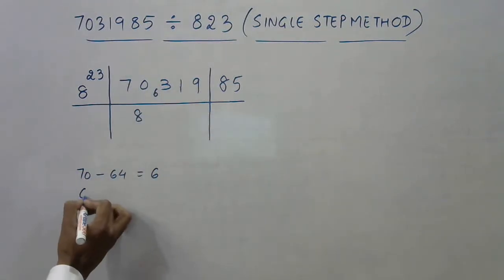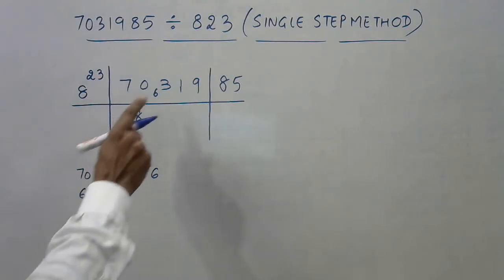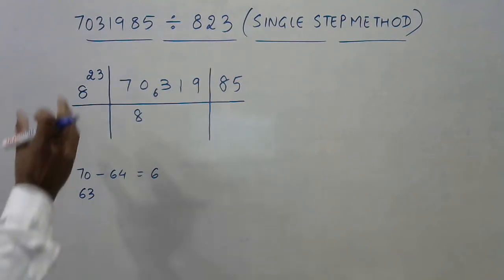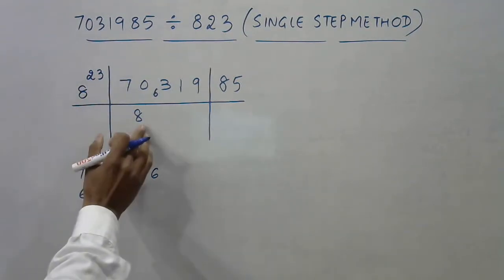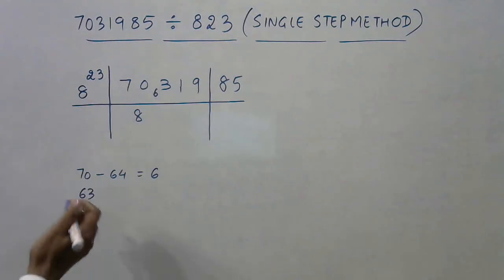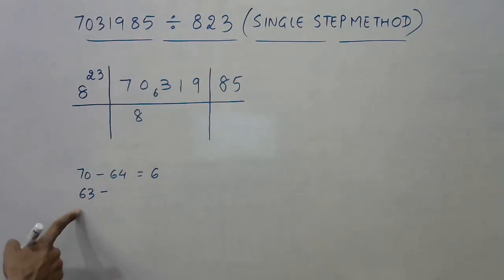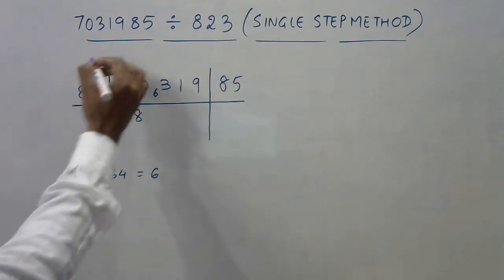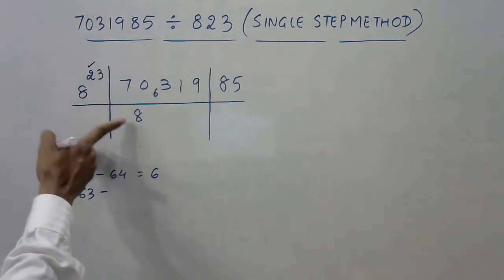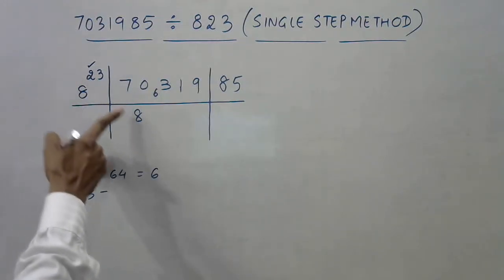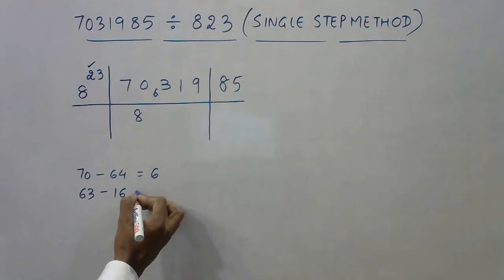That 6 is written after 70 here, making this number 63. This is the new dividend, but 63 is not to be divided directly. When this is a three-digit number, the first step is quite easy. Now the second step involves a minor adjustment. We need to subtract something from this dividend 63. What is to be subtracted is the first digit on the top here, 2, multiplied by the quotient digit here. So 2 into 8 is 16.